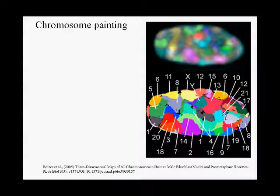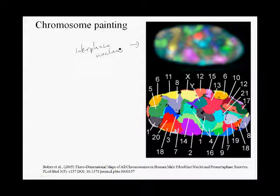A technique called chromosome painting, developed about 10 years ago, has revealed remarkable insights into how chromosomes are organized. Chromosome painting allows us to decorate or label each chromosome with a different fluorescent color. What you see here is an interphase nucleus where all the chromatin is decondensed. Even when they're decondensed, individual chromosomes occupy a distinct region in the nucleus. Before chromosome painting, we didn't know that.